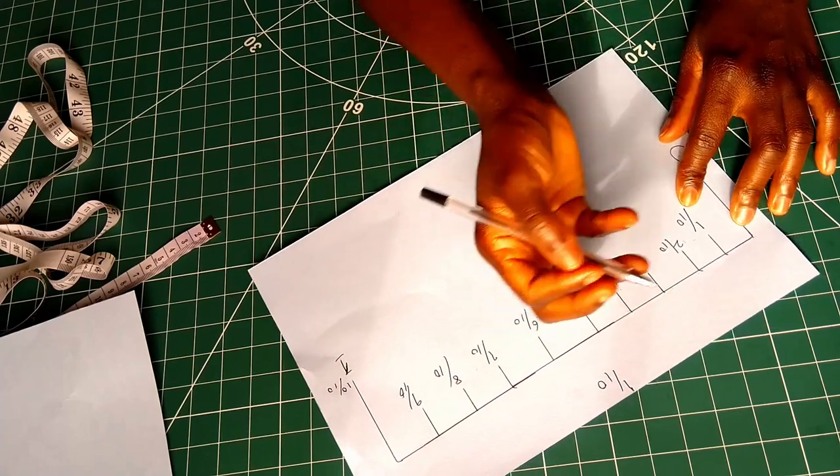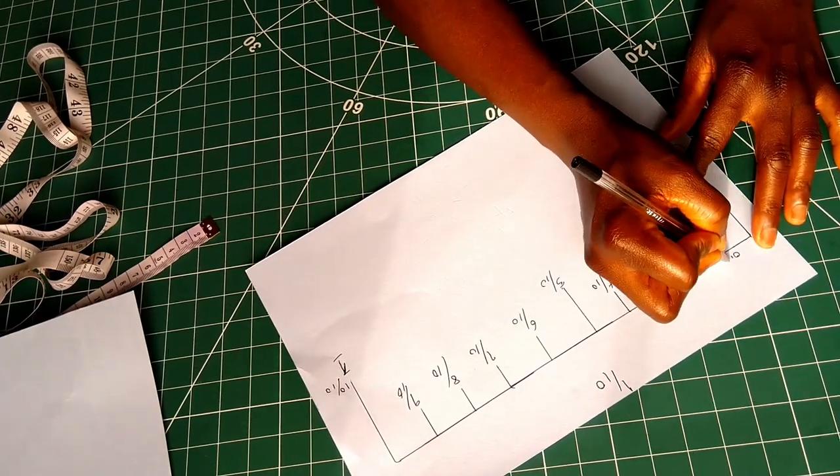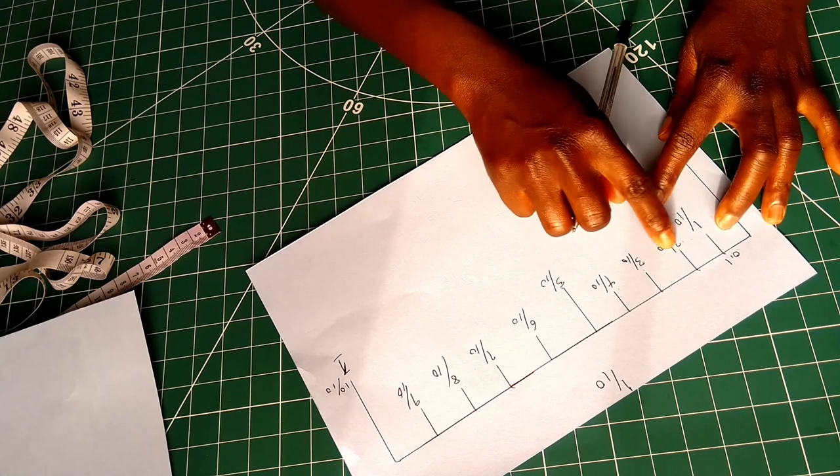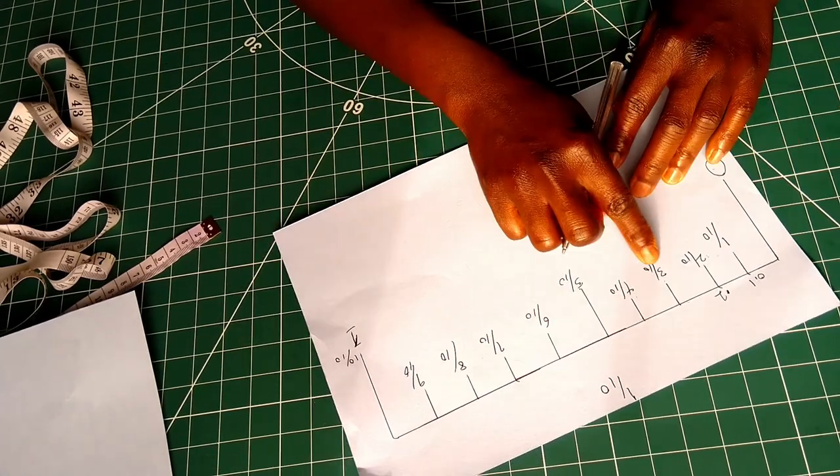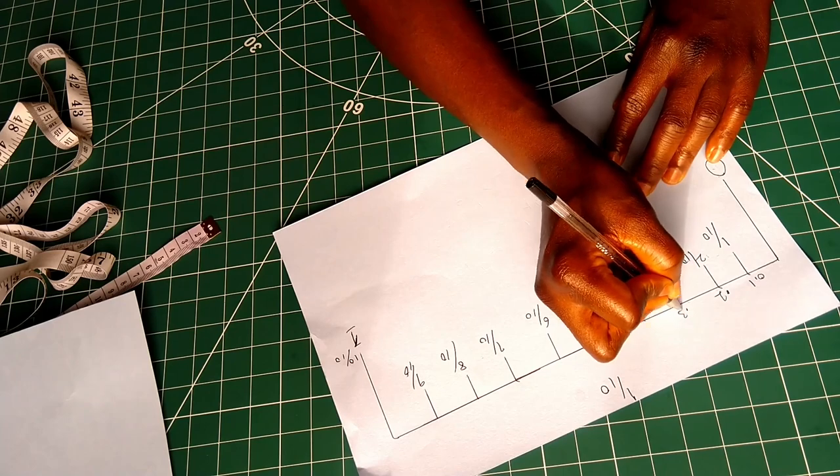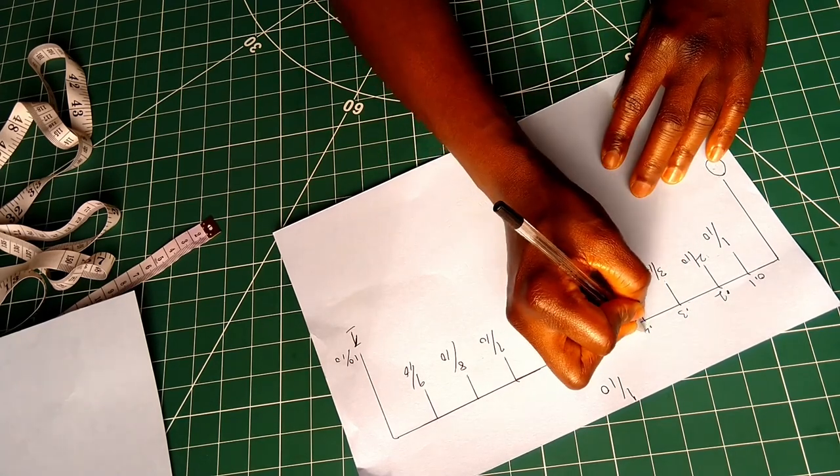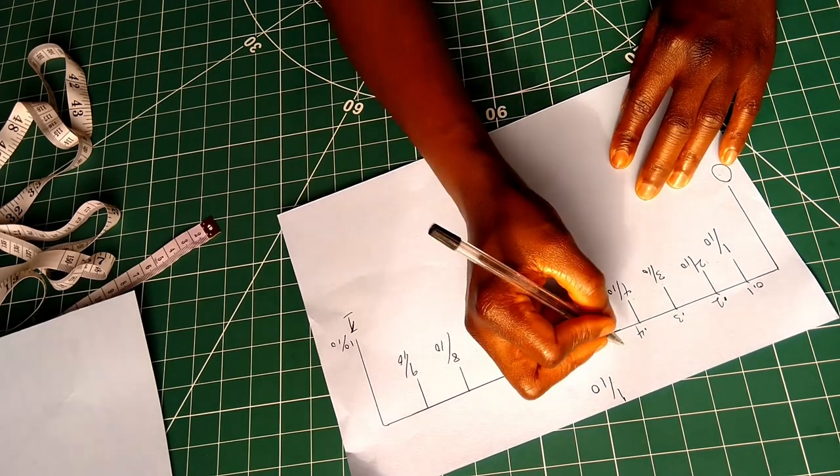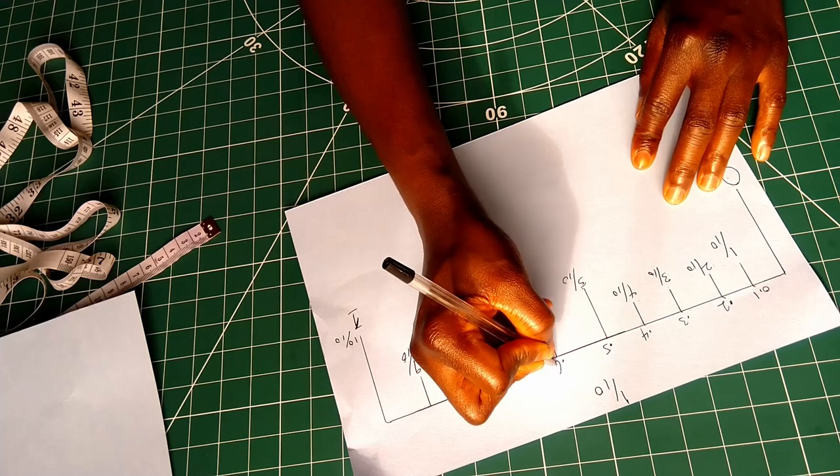When you divide 1 over 10, it's the same as 0.1. The same way, if you divide 2 over 10, it's the same as 0.2. 3 over 10 is 0.3. 4 over 10 is 0.4. 5 over 10 is 0.5. 6 over 10 is 0.6.